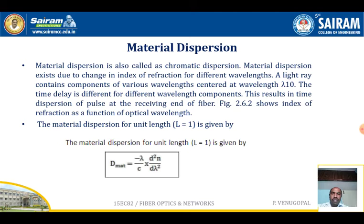Figure 2.6 shows the index of refraction as a function of optical wavelength. The material dispersion for unit length L = 1 is given by: D_material = −(lambda / c) × (d²n / dlambda²), where the second derivative of the index of refraction with respect to wavelength is used.